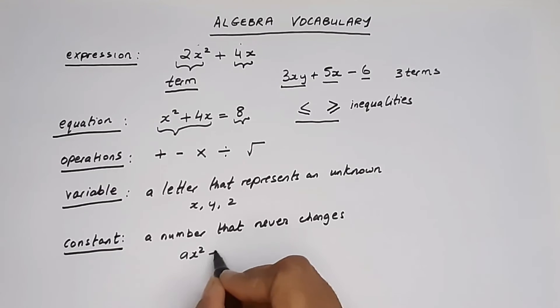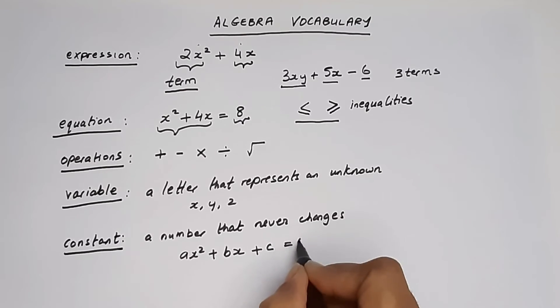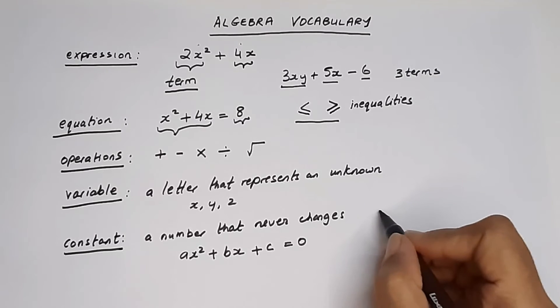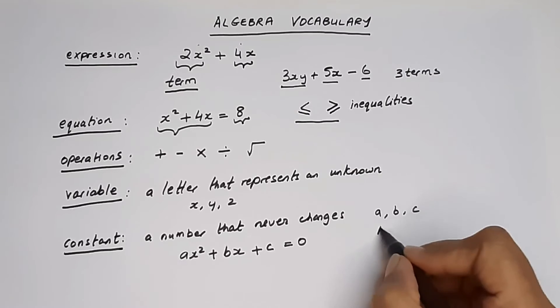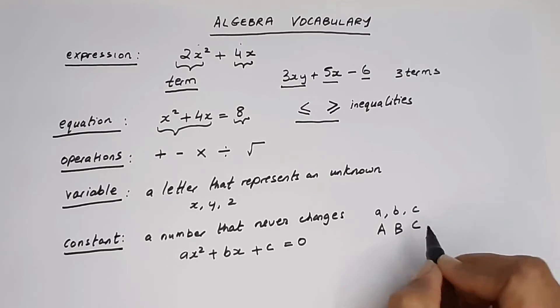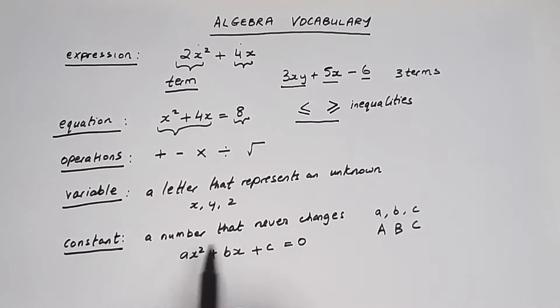ax squared plus bx plus c is equal to 0. Now when it comes to constants, mathematicians love to use the first letters of the alphabet like a, b, c and they even use capital letters like A, B, C. All right, for constants.